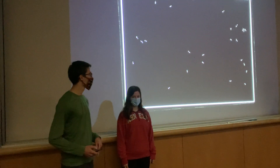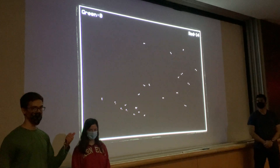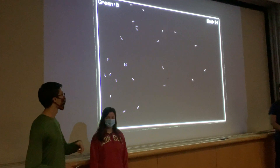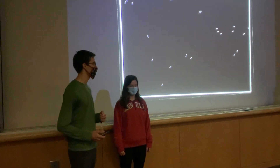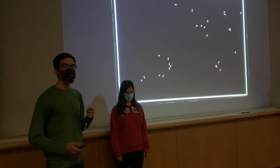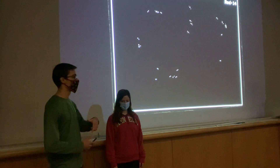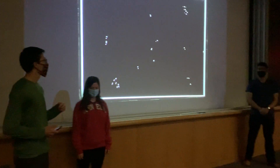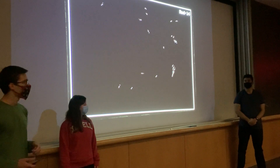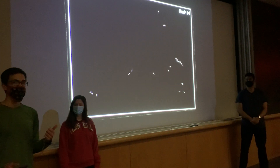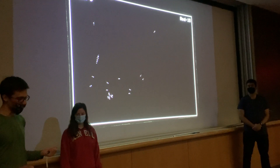For our final project, we were inspired by Lab 2, which involved implementing the Boids algorithm — an algorithm that simulates the flocking behavior of living creatures like birds or fish. At the end of the lab, we extended the algorithm by adding a predator that the Boids avoid. We thought that left room for some really interesting and fun extensions: turning it into a game where a couple of players can control the predators manually and chase around the Boids, trying to eat them like a real predator would.